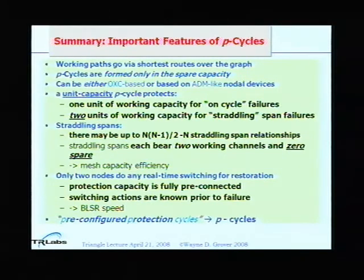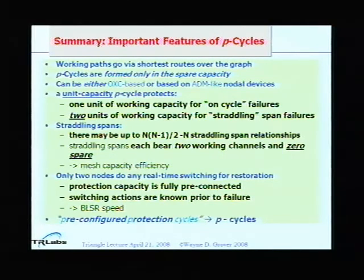To summarize important features of P-cycles: working paths go by shortest routes over the graph — this is often overlooked. People in industry have told me that detail alone can be yet another 30% savings in working capacity investment, before even counting redundancy for spare capacity. P-cycle networks can be built on optical cross-connects or ADM-like node devices.